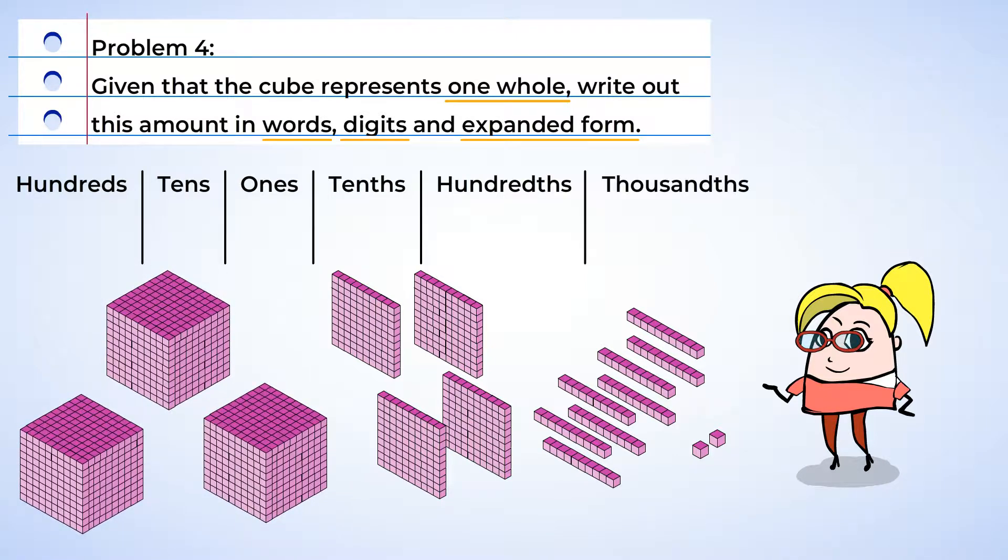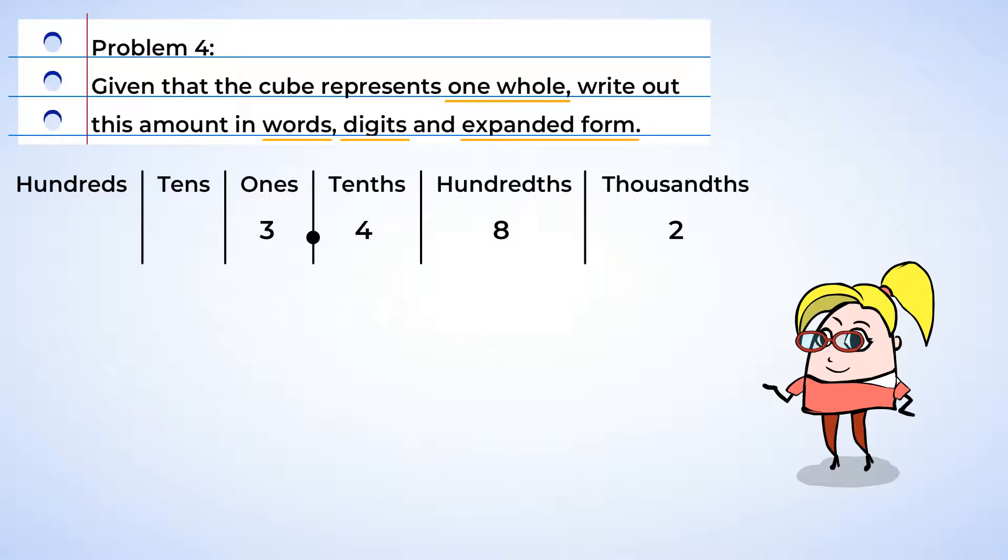There are three cubes, and so three goes into the ones place. And there are four squares, so there are four tenths. And moving on to the rectangles, eight rectangles equals eight hundredths. And finally, we have our small cubes. And there are two small cubes, and that means that there are two thousandths. And now we've written the number in digit form. Now let's read the number so that we can write it out in words. Three and four hundred eighty two thousandths. Excellent.